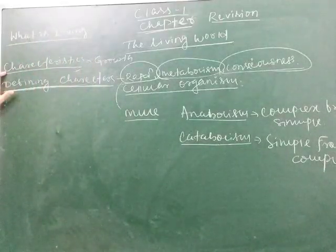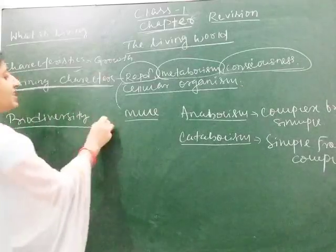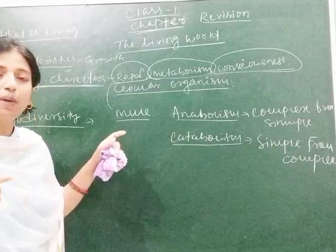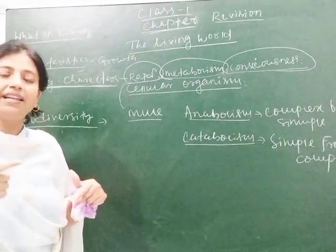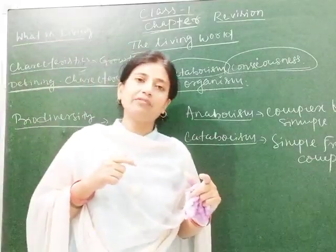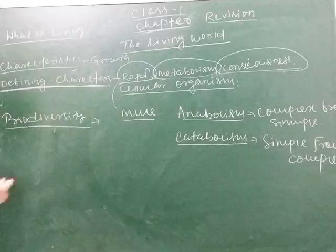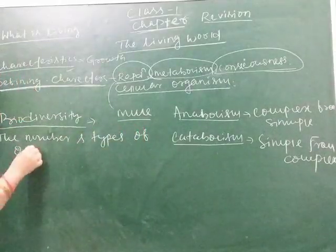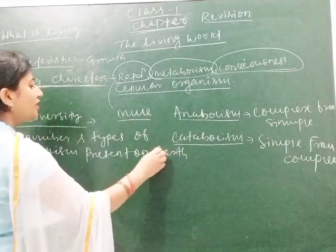So this is the characteristic and defining properties of living organisms. Next topic is biodiversity. Biodiversity means around our environment or surrounding we see different types of organisms including both plants and animals, smaller and higher organisms. All of these are considered as biodiversity — plants, animals, microorganisms. Biodiversity is defined as the number and types of organisms present on earth.